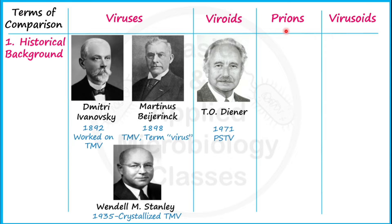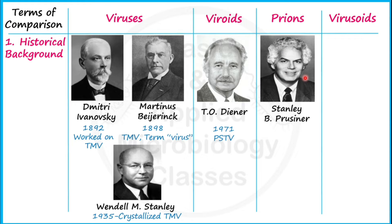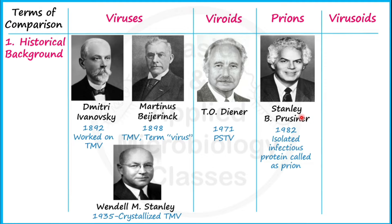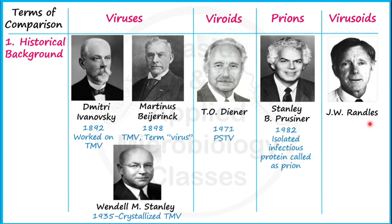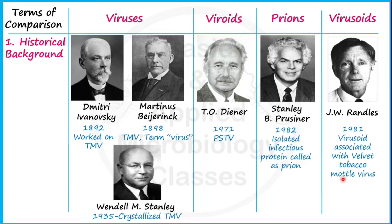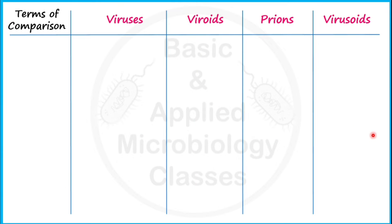For prions, American biochemist and neurologist Stanley B. Prusiner in 1982 successfully isolated infectious proteins called prions. His discovery of prion proteins resulted in him winning the Nobel Prize in 1997. Virusoids, also called satellite viruses, were discovered by J.W. Randles, a phytopathologist, in 1981 — the first virusoid found was associated with velvet tobacco mottle virus.